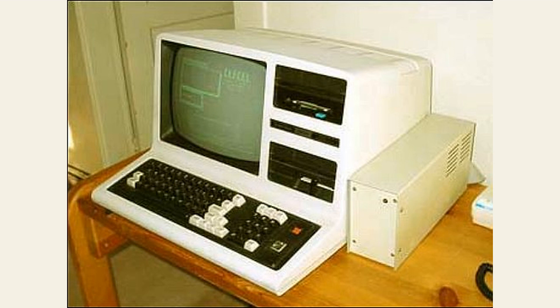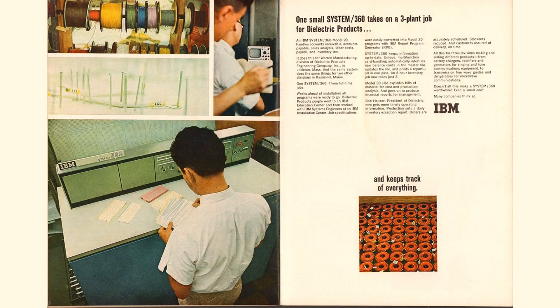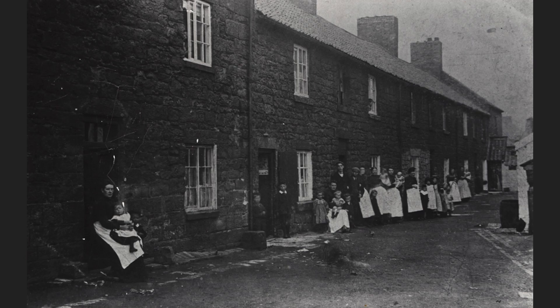In the next segment, we will explore the ways in which linguistics and mathematics intersect in the study of language processing. Language processing is the ability to understand and produce language. It is a complex process that involves many different cognitive and linguistic abilities. What many people do not realize is that language processing also involves mathematical abilities. One of the ways in which mathematics is involved in language processing is through the use of computational models. Computational models are mathematical models that simulate the cognitive processes involved in language processing. These models allow researchers to test hypotheses about the nature of language processing and make predictions about how people will process language in different contexts. For example, researchers have used computational models to study the way that people process sentences with ambiguous meanings. These sentences can be interpreted in different ways depending on the contexts in which they are presented. Computational models have helped researchers to understand how people use contextual information to disambiguate these sentences.